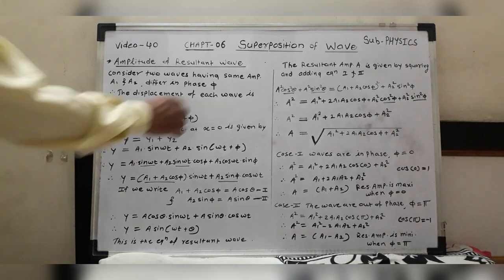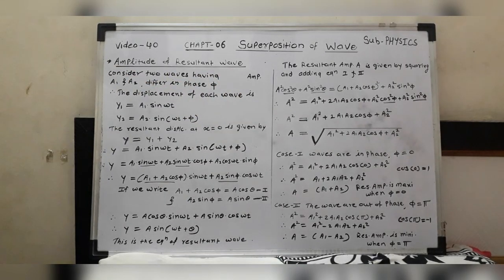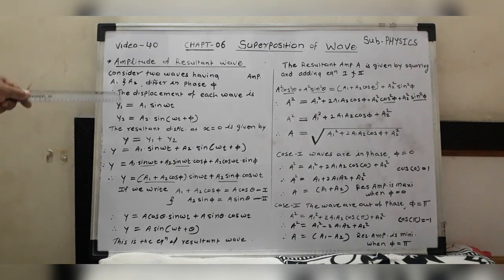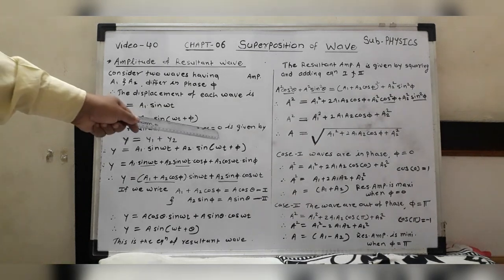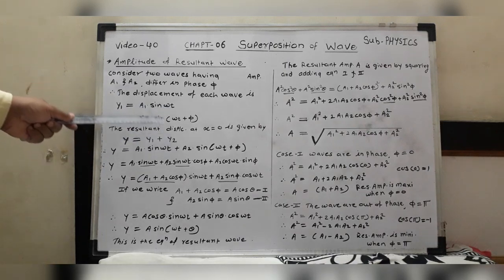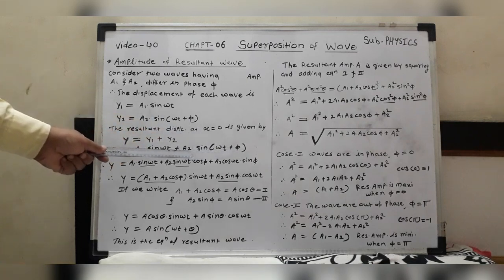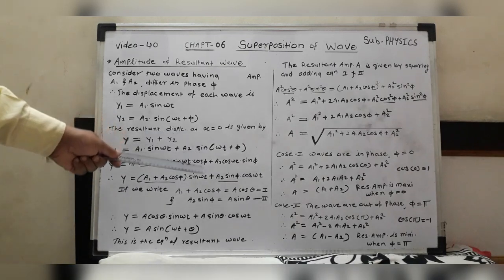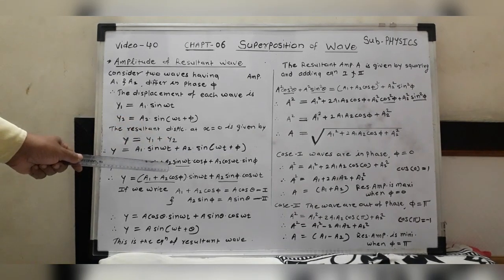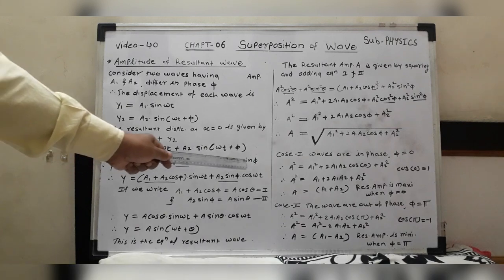The resultant displacement at the origin (x = 0) is given by y = y1 + y2. Substituting: y = A1 sin(ωt) + A2 sin(ωt + π). Using the expansion formula, we write A2 sin(ωt + π) = A2 sin(ωt) cos(π) + A2 cos(ωt) sin(φ).